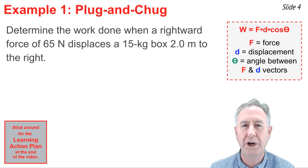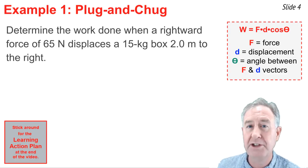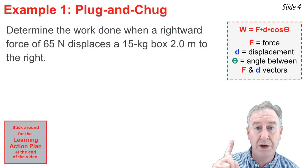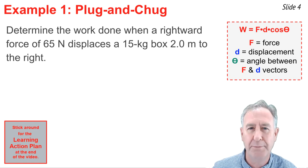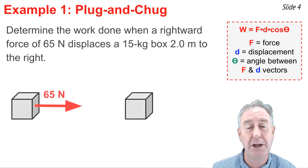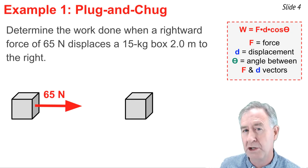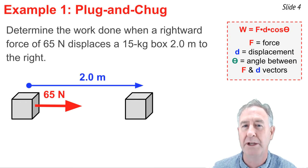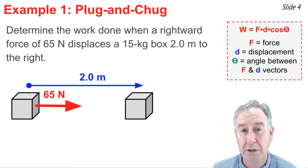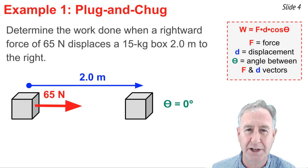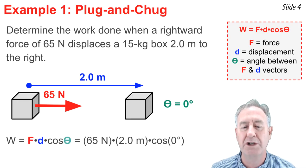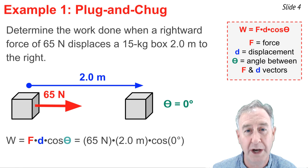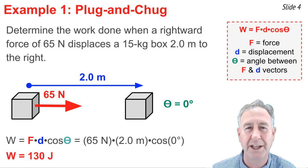In our first example, we want to determine the work done when a rightward force of 65 newtons displaces a 15-kilogram box a distance of 2 meters to the right. In order to calculate work, we need the value of force, displacement, and the angle theta between the force and displacement vectors. I begin with a diagram showing the initial and final position of the box. The force is 65 newtons acting over a displacement of 2 meters. When force and displacement go in the same direction, theta is 0 degrees. Substituting into the equation, with the cosine of 0 equal to 1, the value of work is 130 joules.